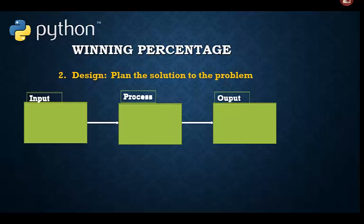Step 2 in the program development cycle is design. We need to plan a step-by-step algorithm for solving the programming problem. We will use the IPO chart strategy, organizing our program solution by using the input, processing, output, or IPO approach.